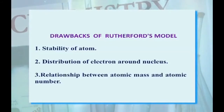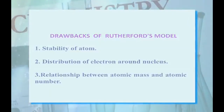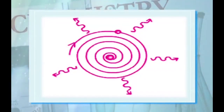After the Rutherford atomic model, there were also some drawbacks. The drawbacks were: the stability of the atom — Rutherford's model did not explain the stability of the atom, that is, the actual positions of electrons and protons. The distribution of electrons around the nucleus was not specified. The relationship between atomic mass and atomic number was also not explained. This picture depicts that when electrons start revolving around the nucleus, they will radiate energy and ultimately collide with the nucleus, showing the instability of Rutherford's atomic model.